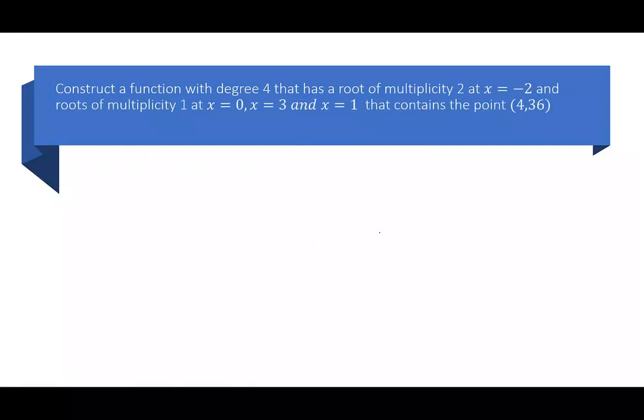So we're going to do one more. This time, instead of giving you an intercept, I'm just giving you a point. So I have a function with degree 4. It has roots of multiplicity 2 at x = -2, and then roots of multiplicity 1 at x = 0, x = 3, and x = 1, and it contains the point (4,36).